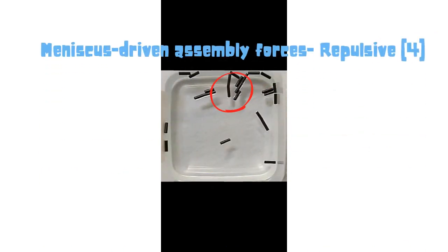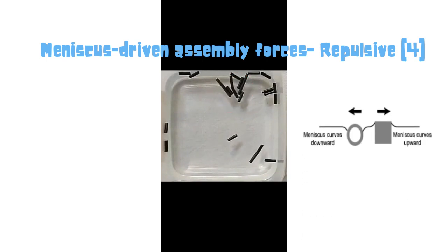If the meniscus are in opposite direction, the straws are repelled away. Due to this reason, an edge coming close to the side gets repelled.